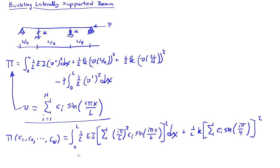Quantity squared, plus one-half K for the second spring, sum again over I, CI sine of I 3 pi over 4, quantity squared. And then we have the potential of the load.